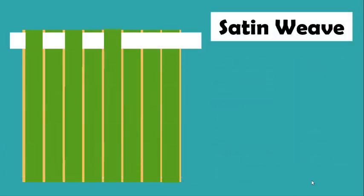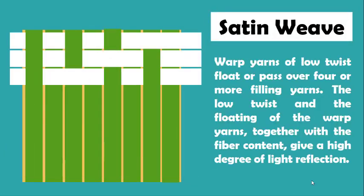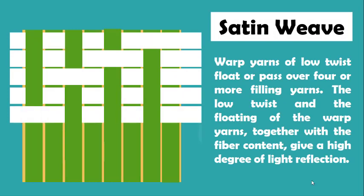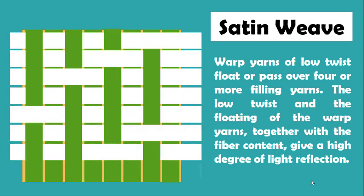And the last type is satin weave. Satin weave is characterized by floating yarns used to produce a high luster on one side of a fabric. Warp yarns of low twist float or pass over four or more filling yarns. The low twist and the floating of the warp yarns together with the fiber content give a high degree of light reflection.